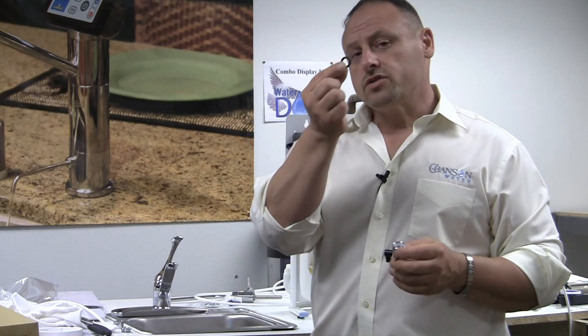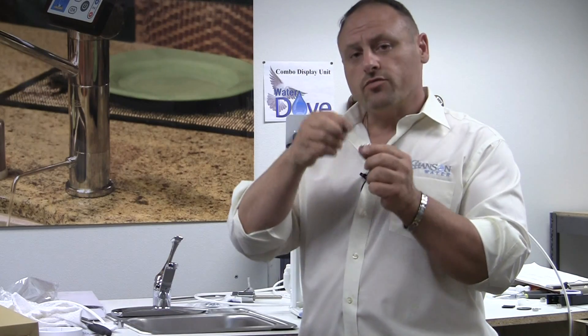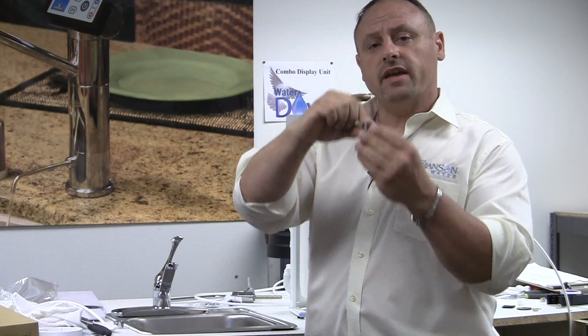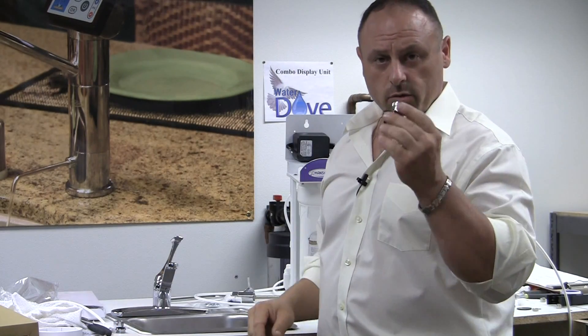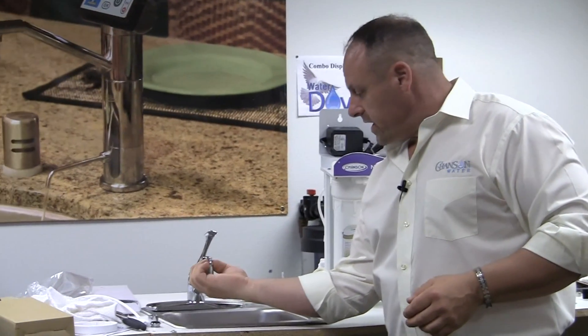You'll also notice there's a rubber ring on this handle here. This rubber ring is if you were using this insert, it would go on the top of the insert and then up into your faucet. Again, that's a part you're going to want to save. So you'll just take this adapter, screw it right onto the threads.